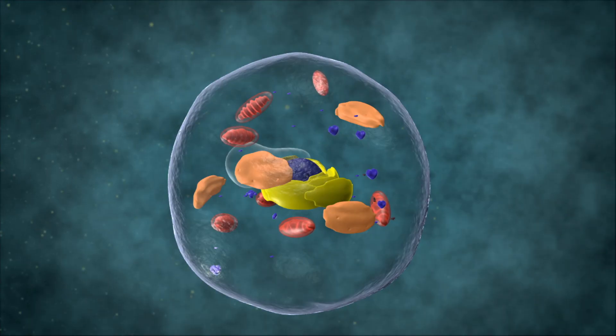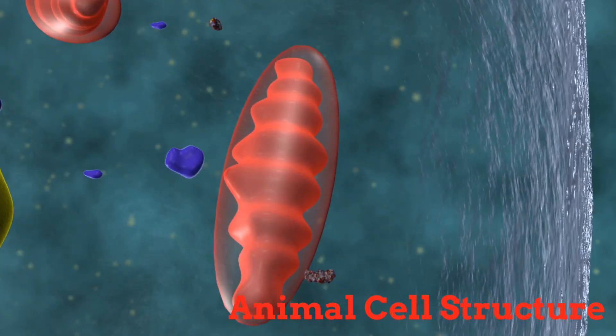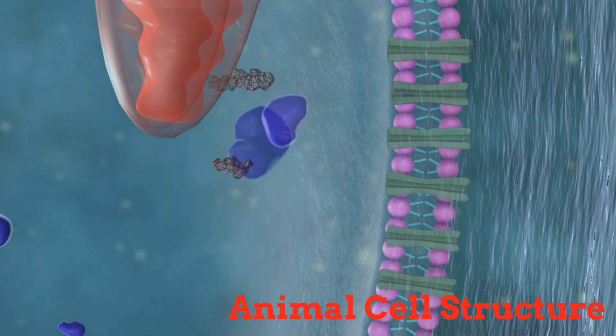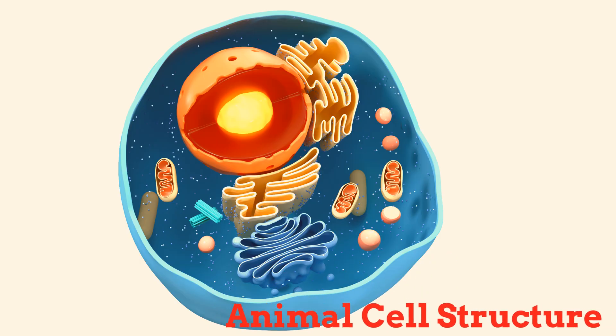Now let's watch a quick video on the animal cell structure. After watching this video you can see that the plant and animal cells have many differences. We're going to be talking about the differences later on in another video. But now you have an understanding of how a plant and animal cell looks like viewed under a microscope.